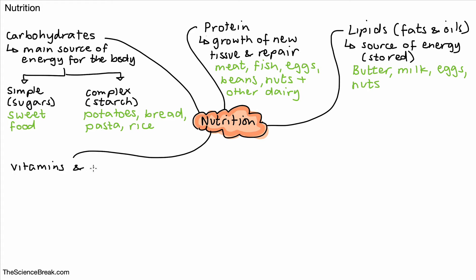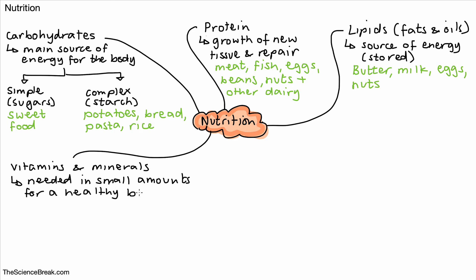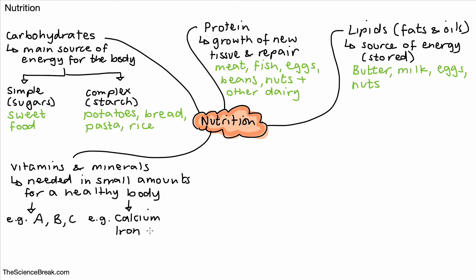The next nutrients are vitamins and minerals. These don't really provide energy but they provide small amounts of nutrients needed to keep the body healthy — only needed in small amounts, but very important. Examples of vitamins include vitamin A, B, C, D, and E. For minerals, two key examples are calcium, which is needed for strong bones and teeth, and iron, which is needed for the healthy functioning of red blood cells to help carry oxygen.